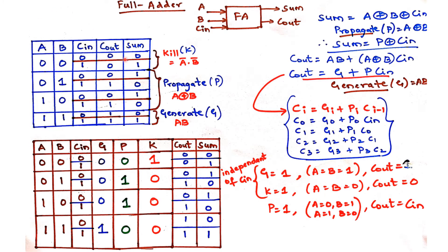Before moving to the carry lookahead adder, let us first understand the generate, propagate, and kill concept, which is required for the carry lookahead adder. To understand this, consider a 1-bit full adder with inputs A, B, Cin, output sum and Cout. You are familiar with the truth table — for the given A, B, Cin values, these are the Cout and sum values we get.